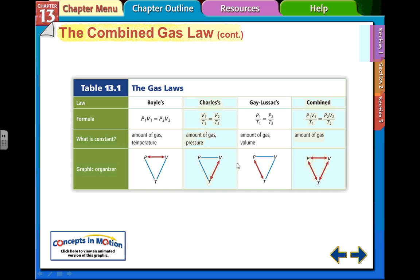So here's the relationships that we've gone over. Boyle's law: constant temperature, P1V1 equals P2V2. Charles' law: pressure is the constant, V over T equals V over T. Gay-Lussac's law: amount of gas, the volume is the same, P1/T1 equals P2/T2. And the combined gas law combines all three of these relationships into one mathematical relationship.